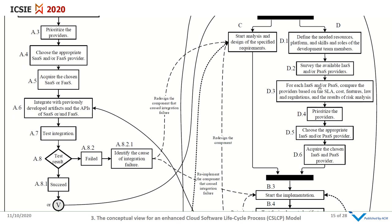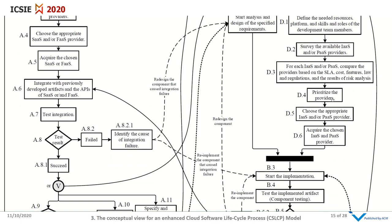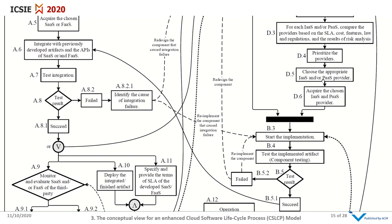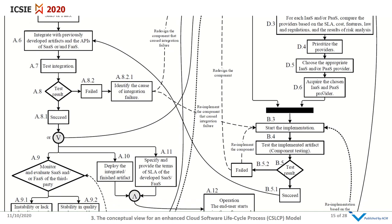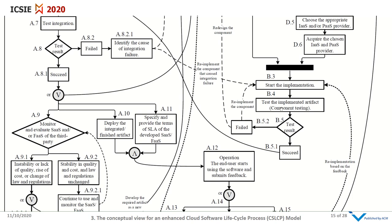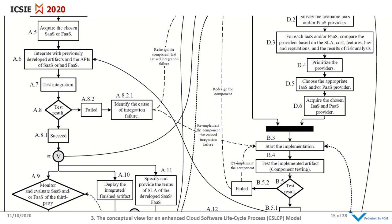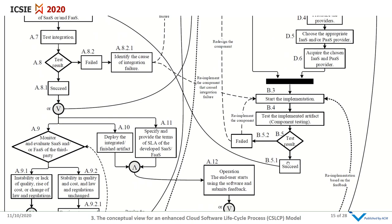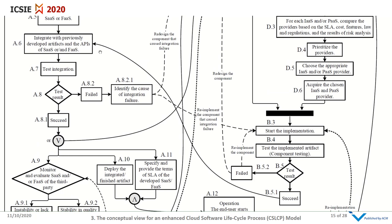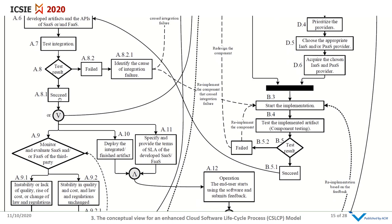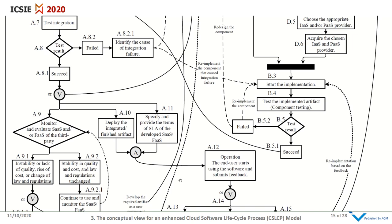For each IaaS or PaaS provider, compare them based on service level agreement, cost, features, law and regulations, and results of risk analysis. Then prioritize the providers, choose the appropriate one, acquire the chosen IaaS or PaaS, and start the implementation. Then perform component testing. In case of failure, re-implement or redesign the failing component. In case of success, integrate the implemented requirement or component with the previously developed or acquired services, perform integration testing, and upon success, deploy the artifacts and start the operation process.